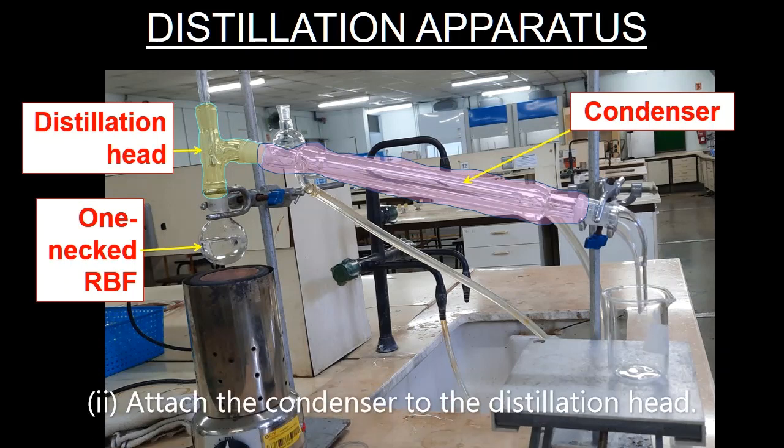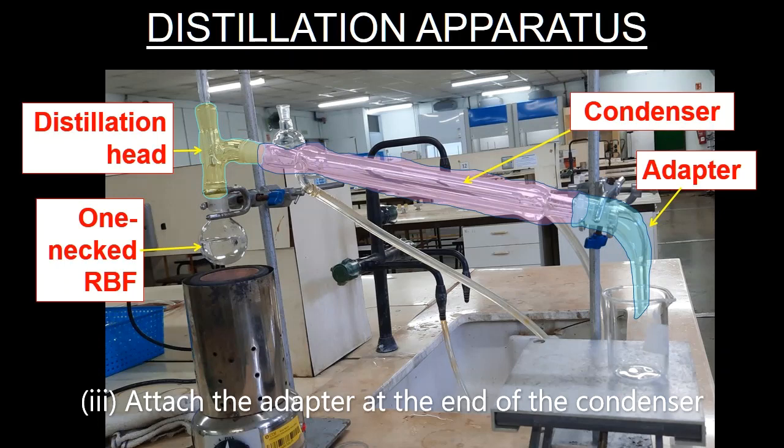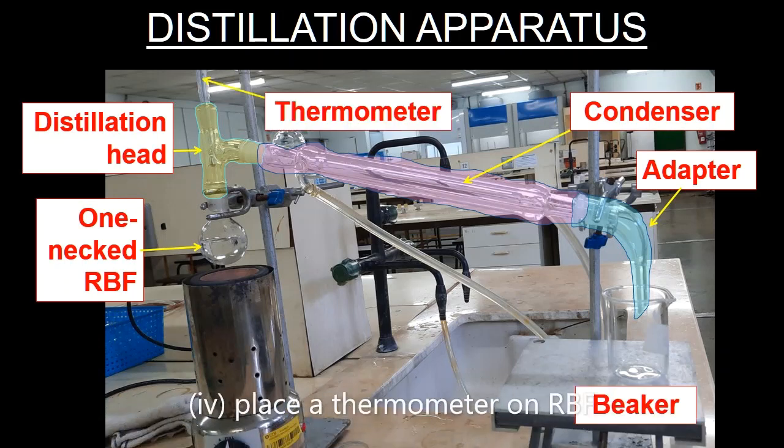Next, assemble the condenser. Attach the adapter to the end of the condenser as highlighted in blue. Add the adapter and place a beaker below the fraction collector as shown here.